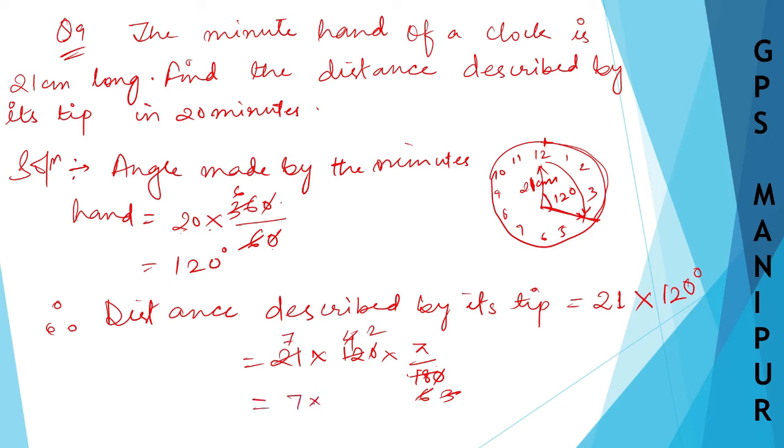So I can write down here 14 pi. Instead of pi, you can write it as 22 by 7. 7 to the 14, so 22 into 2 is 44. So it is in centimeters.